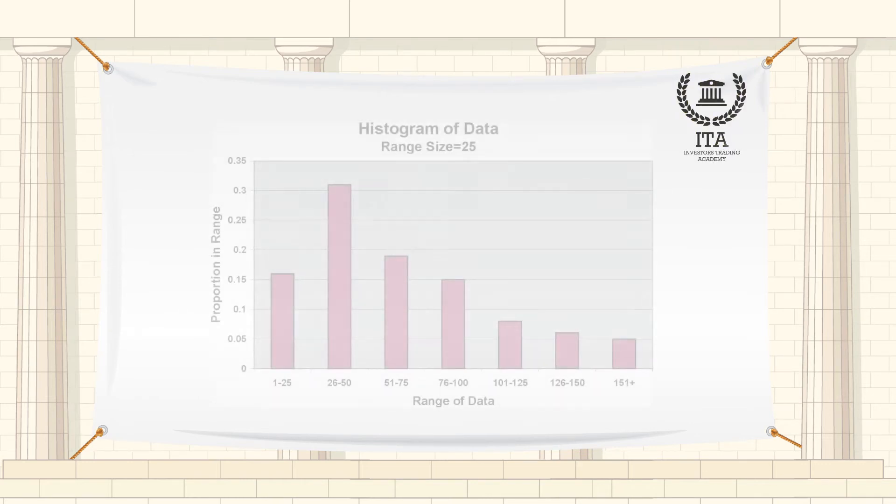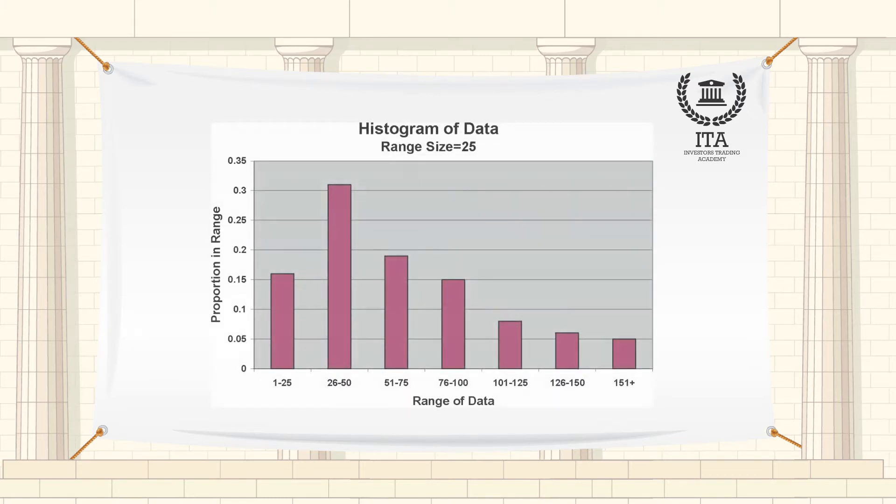A histogram is a graphical representation of the distribution of data. It is an estimate of the probability distribution of a continuous variable and was first introduced by Carl Pearson.